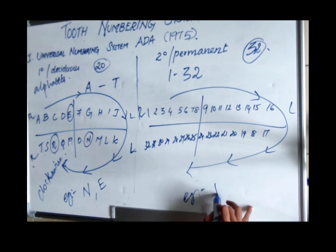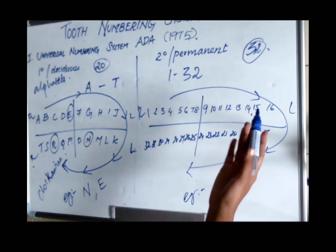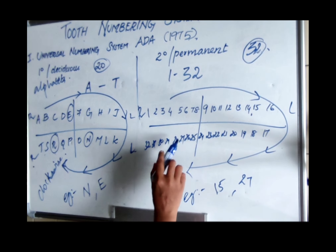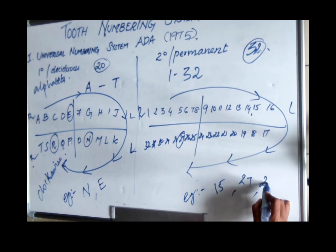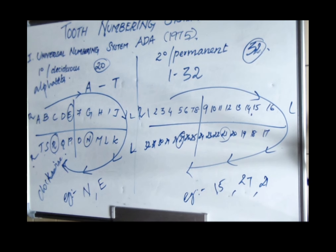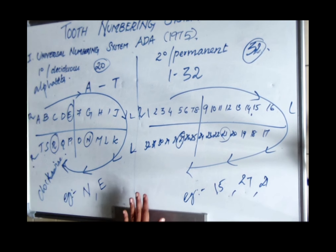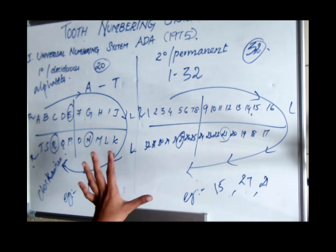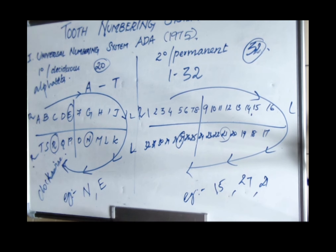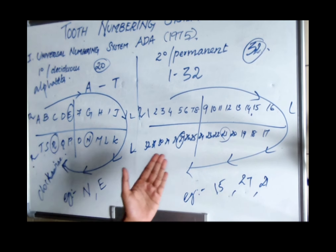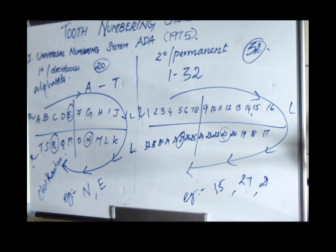For example: number 15 denotes the maxillary left second molar; number 27 denotes the mandibular right canine; number 21 denotes the mandibular left second premolar. The advantage of the Universal system is that data entry is easy and there is less chance of mistake when communicating a specific tooth.